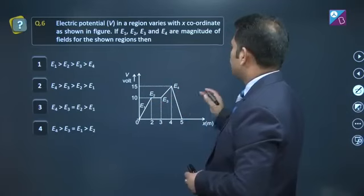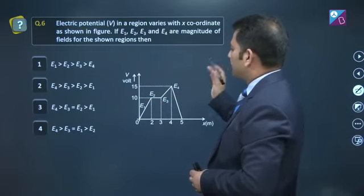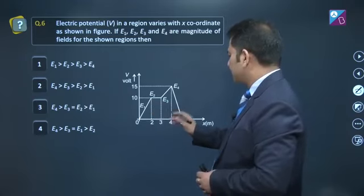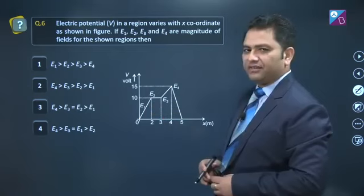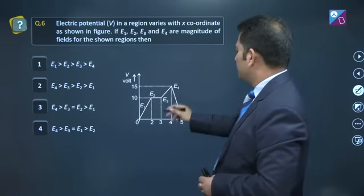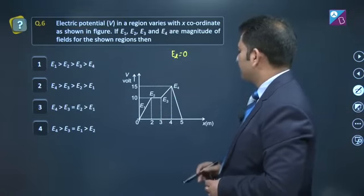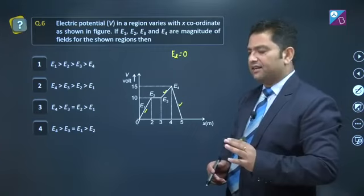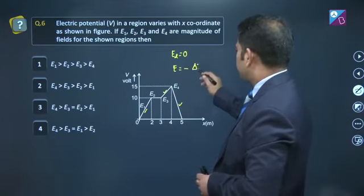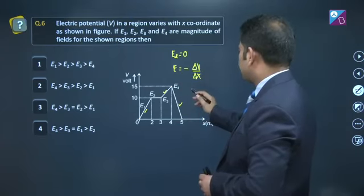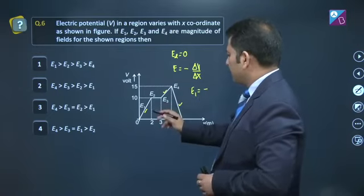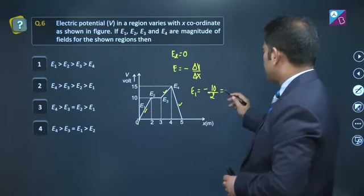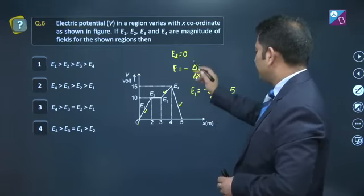Question number 6: There is a graph of potential versus position, and we have to rank the magnitude of electric field at 1, 2, 3, 4. Look, first of all, between 2 and 3, potential is constant, so electric field will be 0. Between 2 to 3, which we call e2, equals 0. At the rest - here, here, and here - potential is varying at uniform rate. In that case, electric field can be written as minus ΔV/Δx. Let's write one by one. E1 = -(V2-V1)/(x2-x1) = -(10-0)/(2-0) = -5. E2 is already 0. E3 = -(5-10)/(4-3) = -5.